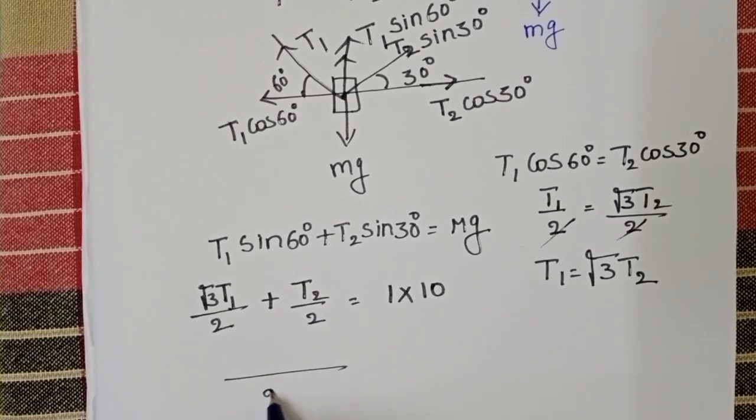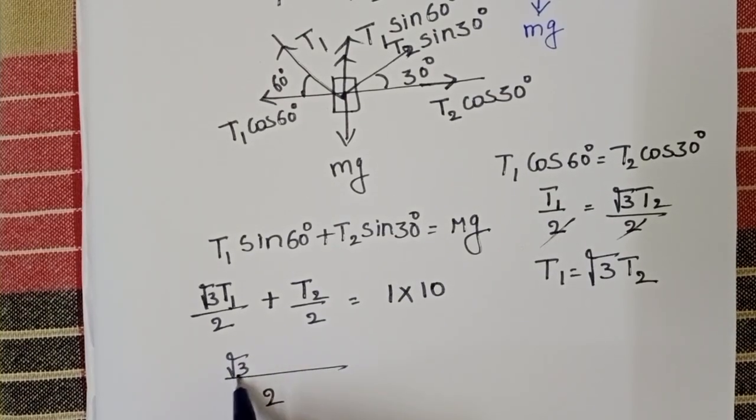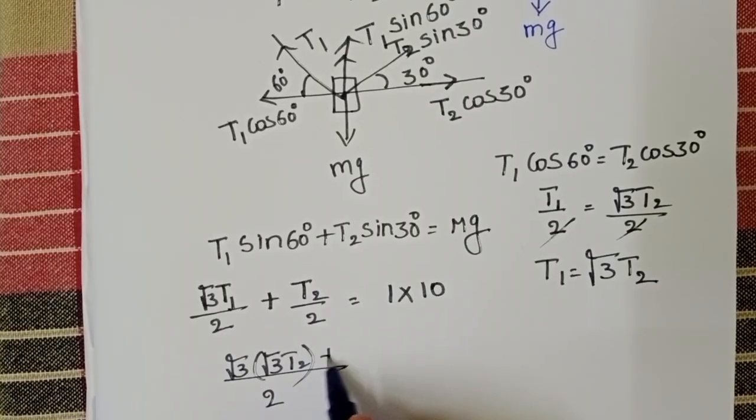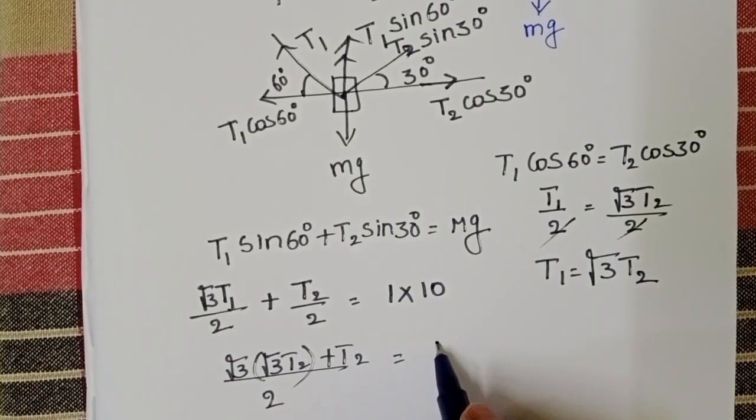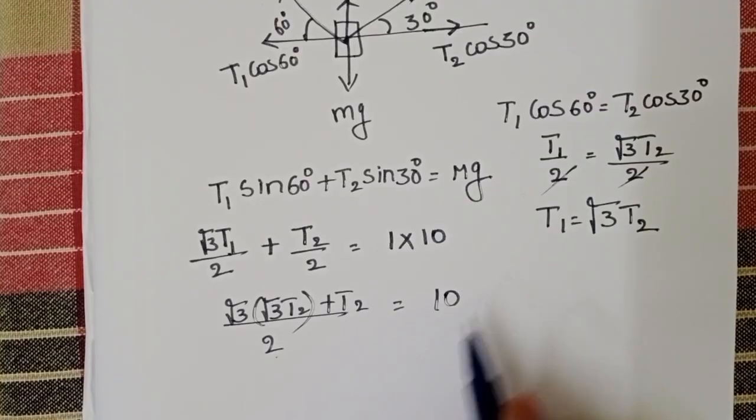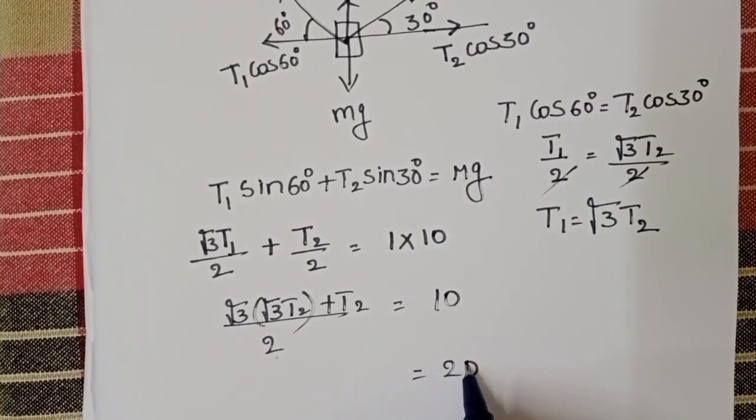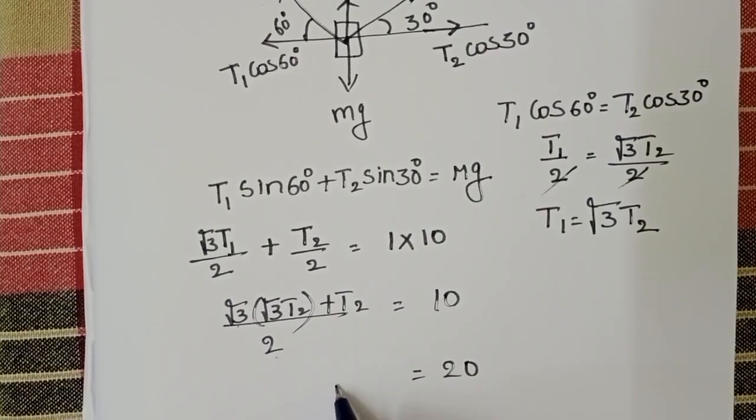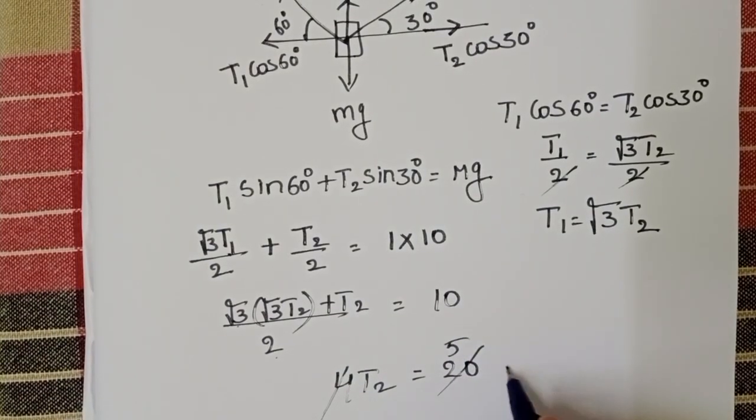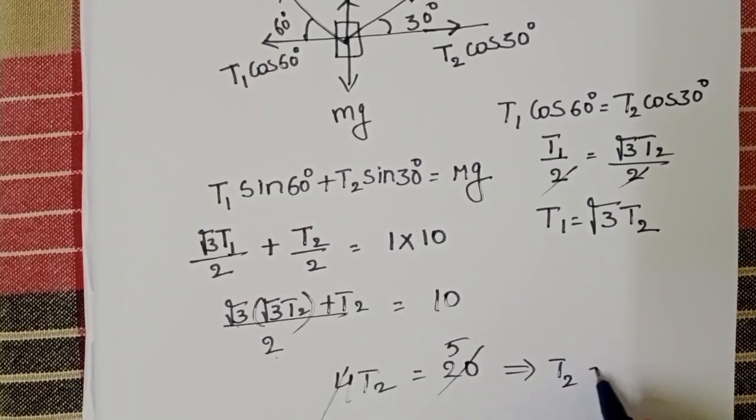Here LCM is 2. Root 3 into root 3 T2 plus T2 equals 10. This 2 goes to right hand side 10 into 2 20. Root 3 into root 3 is 3, 3 T2 plus T2 is 4 T2. So T2 value is 5 newtons.